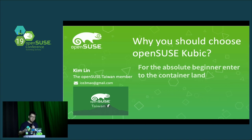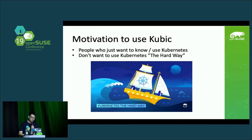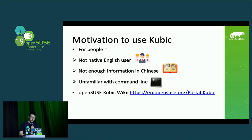The first motivation to use Kubic is for people who just want to know or use Kubernetes, but don't want to set up Kubernetes the hard way. I think 80% of people, if they don't have a container background or knowledge, will get frustrated or give up while setting up Kubernetes. The second motivation is for non-native English users — there's still not enough information available in Chinese, as a lot of IT information is translated into Japanese and French immediately, but not Chinese.